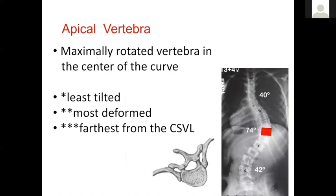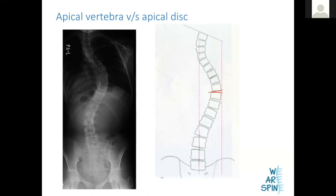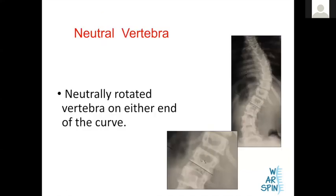Sometimes the end or apical vertebra could actually be a disc. To identify the apical vertebra, draw the central sacral vertical line from the middle of the sacrum, draw a tangent along the curve, and where the tangent cuts the curve is the apex. In some cases, the apex falls at a disc rather than a bone, meaning the scoliosis has two apical vertebrae.